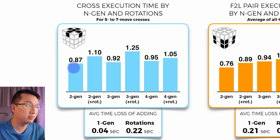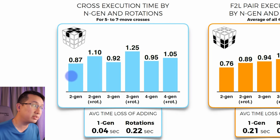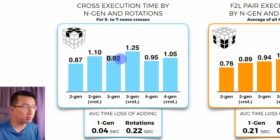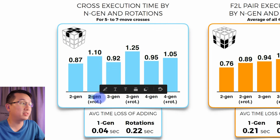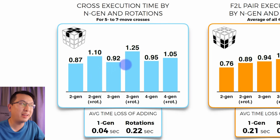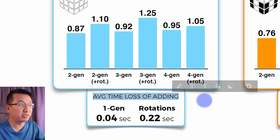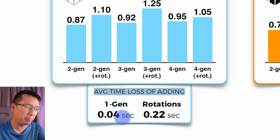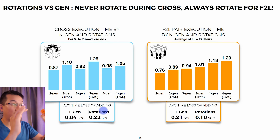Out of the nearly 5,000 solves, those who solved the cross using two-gen methods took 0.87 seconds on average; three-gen took 0.92; and four-gen took 0.95. So using more sides doesn't affect it that much. But what really seems to matter is rotating during your cross. For people who solved the cross using a two-gen method but with rotations, their time increased by about 20%. That happened for three-gen and four-gen as well. On average, rotating during the cross slows it down significantly more than adding sides.